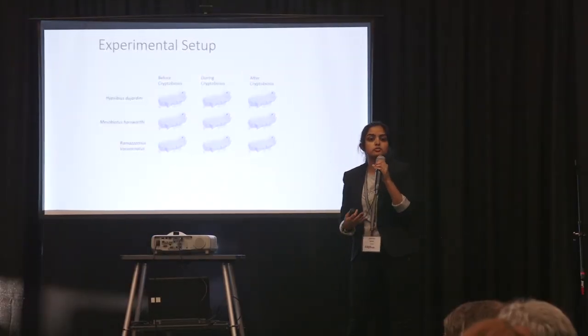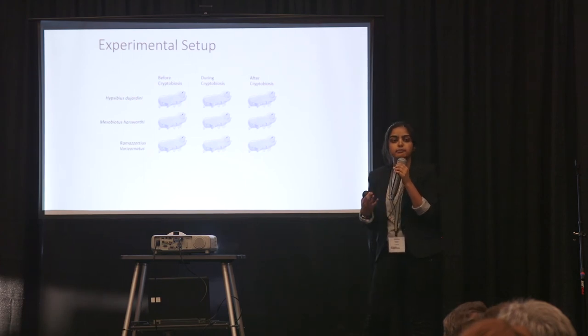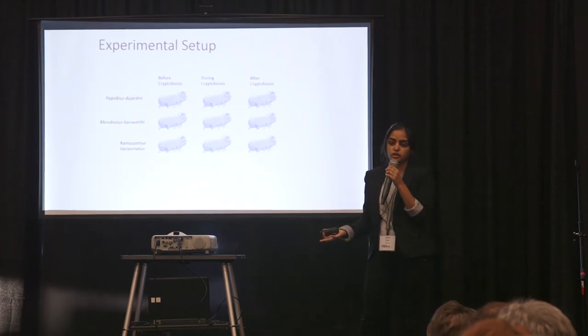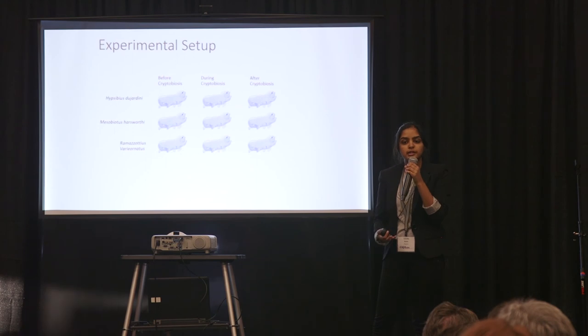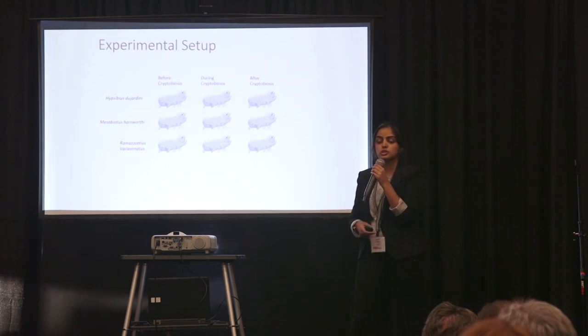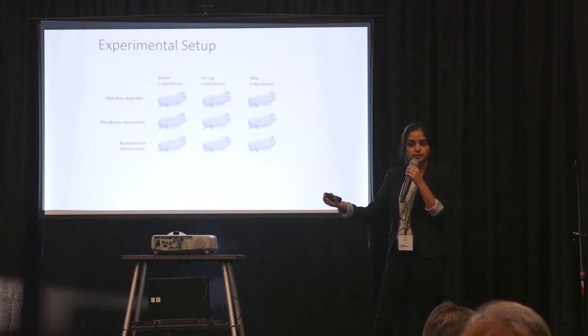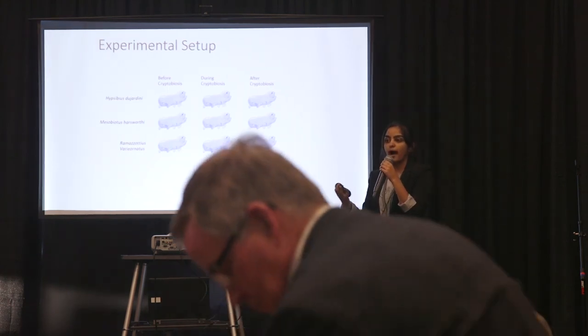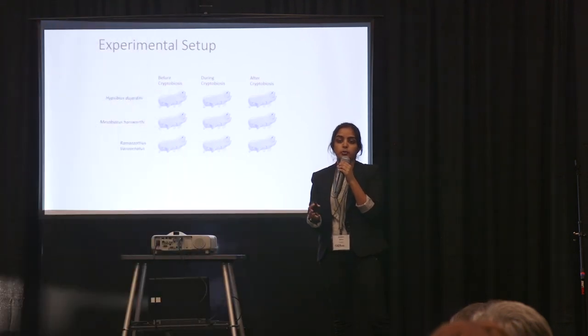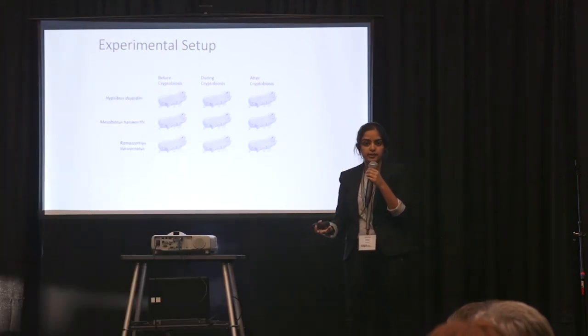Now to establish this rate of DNA repair, I wanted to look at the amount of DNA damage before and during and after cryptobiosis. With the idea being that before cryptobiosis, there should be no DNA damage. During cryptobiosis is when that DNA damage would accumulate. And then after they come out of cryptobiosis, that DNA damage would recede as they are able to repair it.